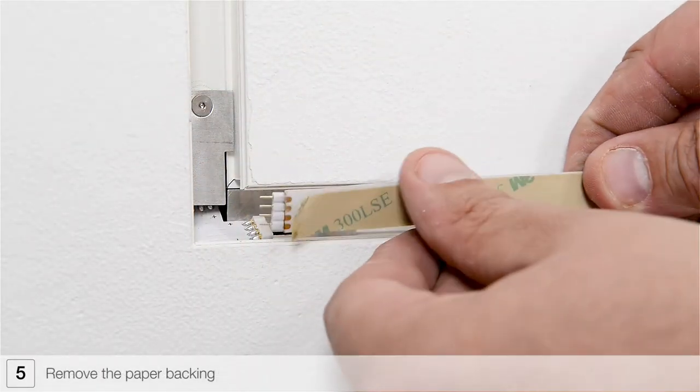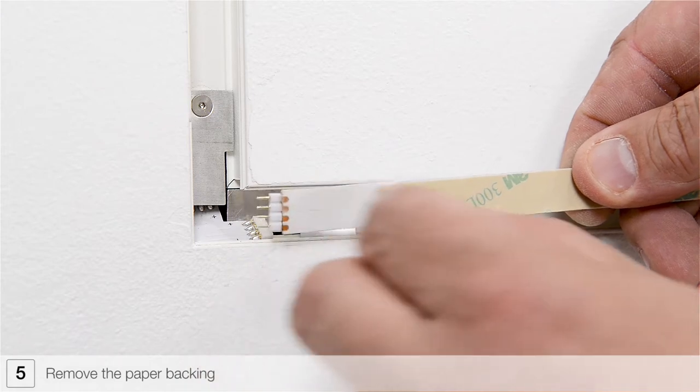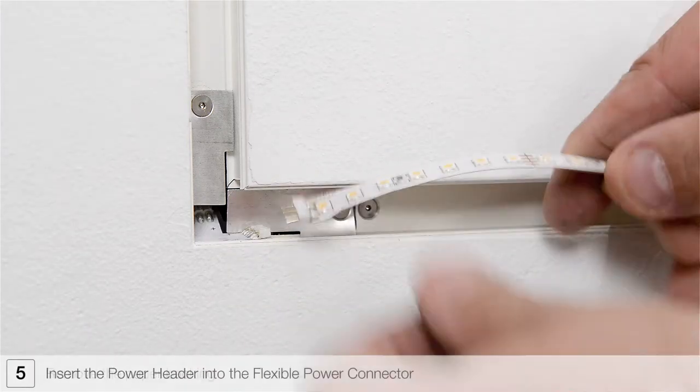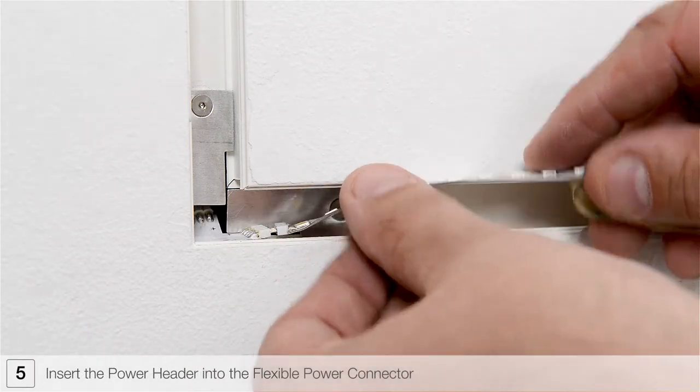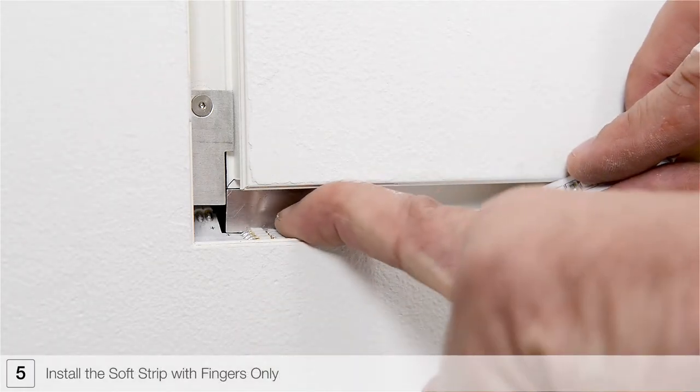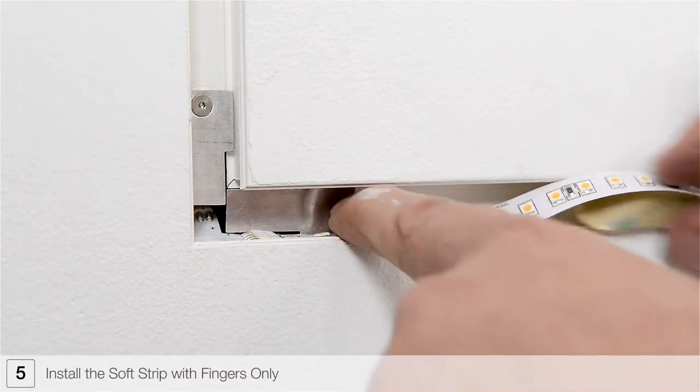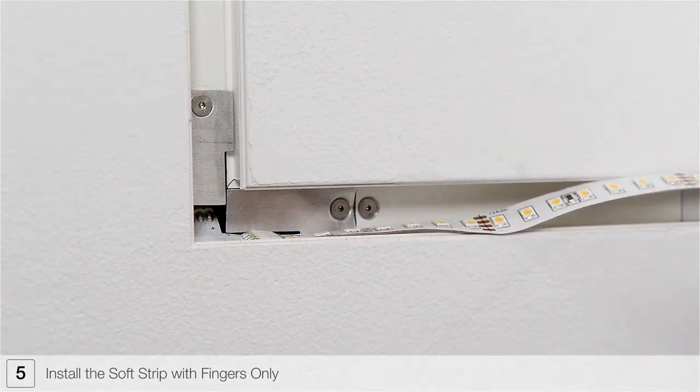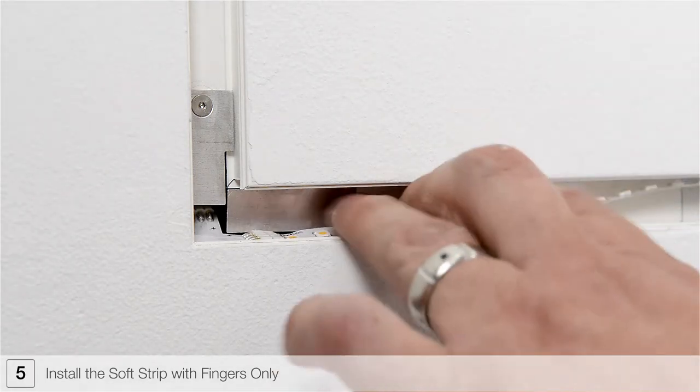Begin installing the LEDs by removing a small section of the paper backing from the strip. Insert the power header into the flexible power connector. It is important that when installing the soft strip no tools or hard instruments are used that may cause damage. Only use fingers to install the strip.